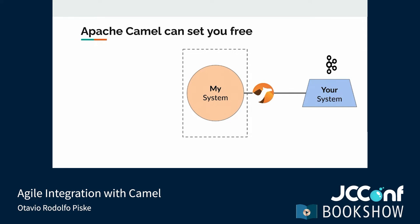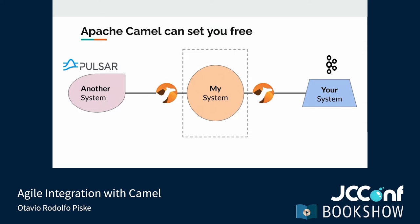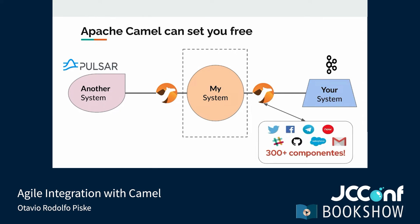There are three concepts from Camel that provide the groundwork: components, routes, and domain-specific languages (DSLs). The components provide the lower-level logic that Camel uses to talk to other systems. Through them, Camel can talk to a variety of systems — from different messaging protocols to distinct databases to specific solutions like Salesforce, Twitter, and Telegram. Camel aims to allow your application to talk to everything, and there are more than 300 components in Camel.